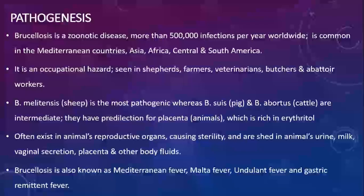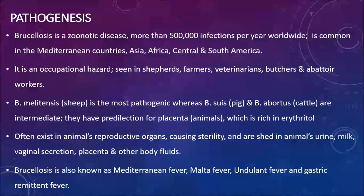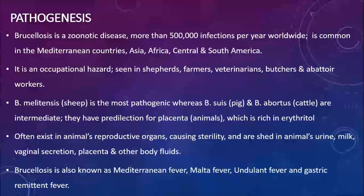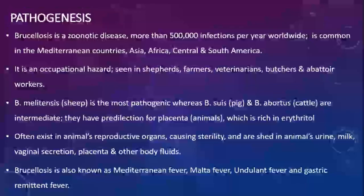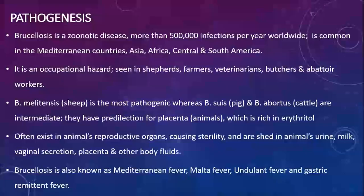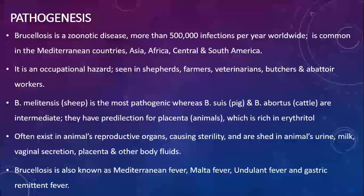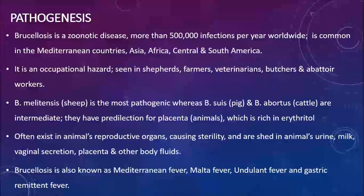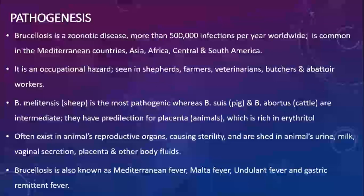In animals, these bacteria may be found in their reproductive organs. They may cause abortion and sterility, and these animals shed the bacteria in their urine, milk, vaginal secretions, placenta, or other body fluids. Brucellosis is also known by a few other names: Mediterranean fever, Malta fever, undulant fever, and gastric remittent fever. Malta refers to the region where it was first discovered.